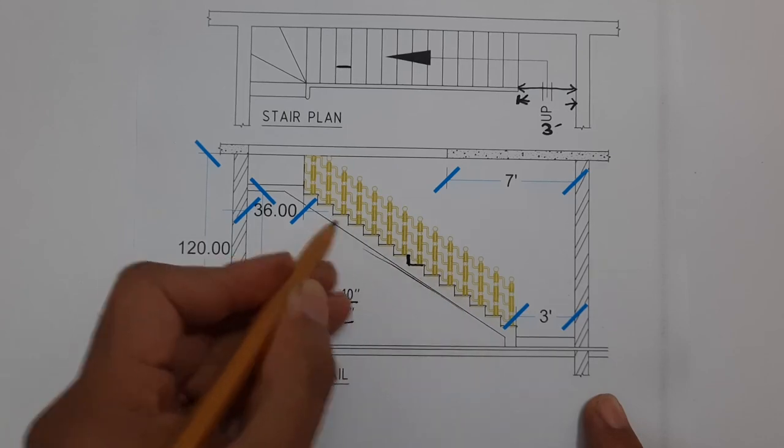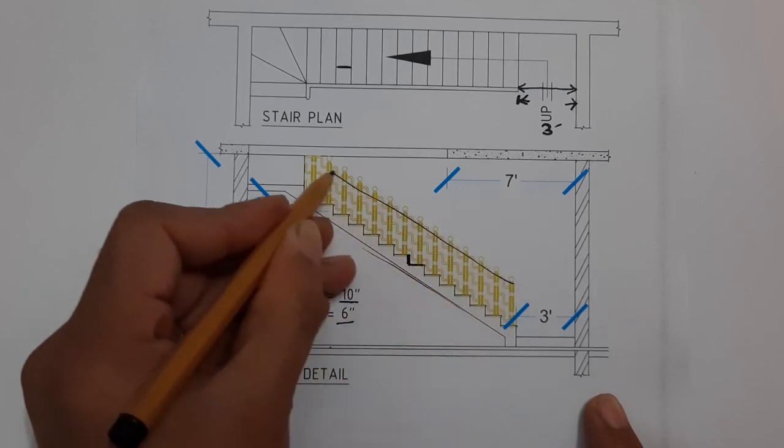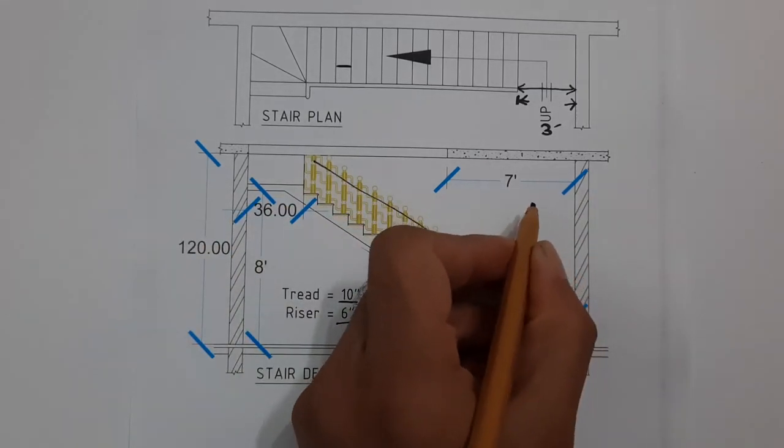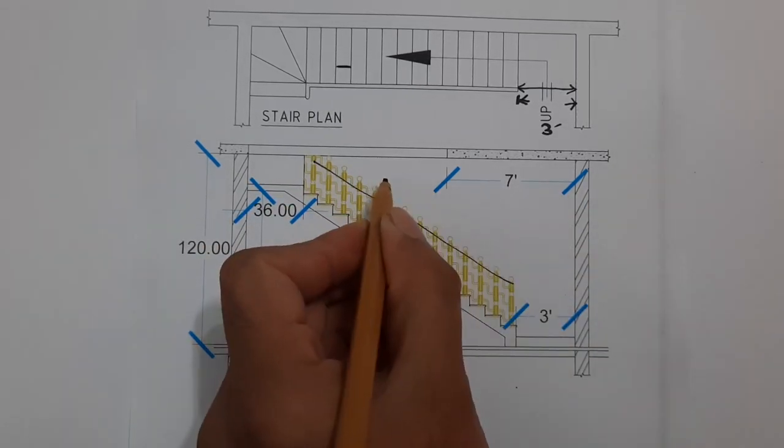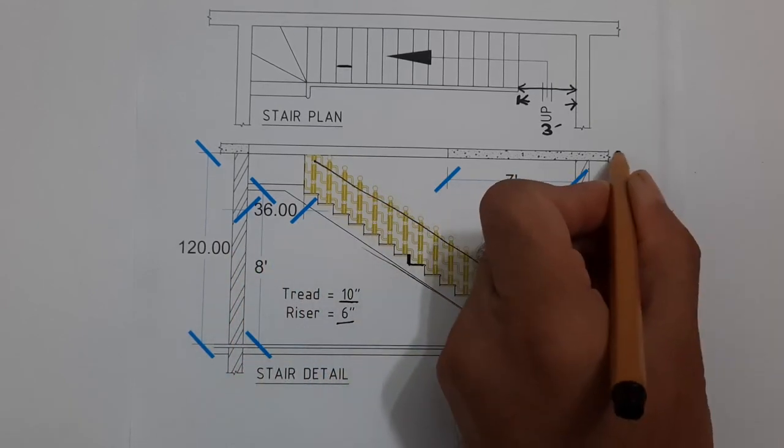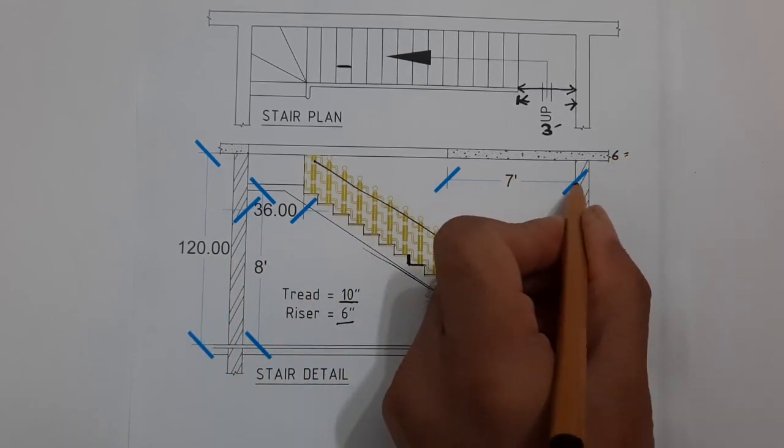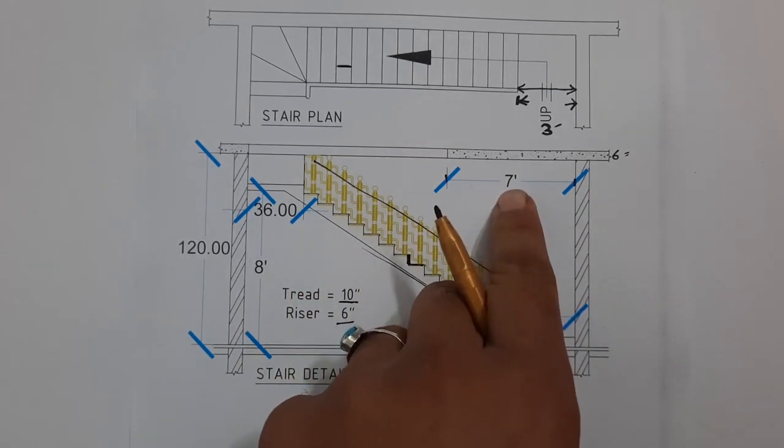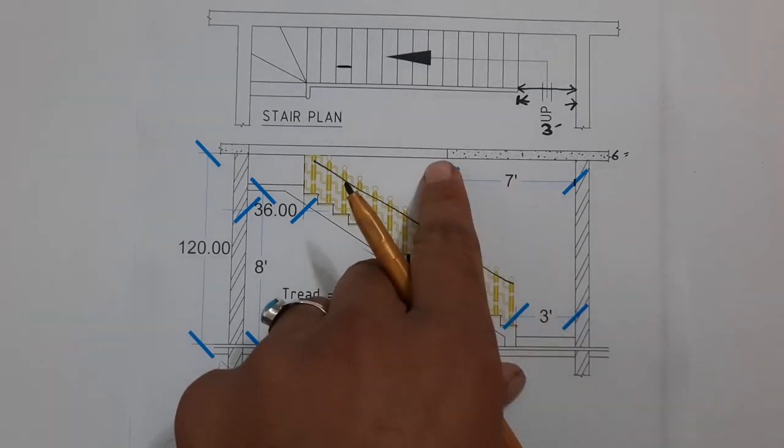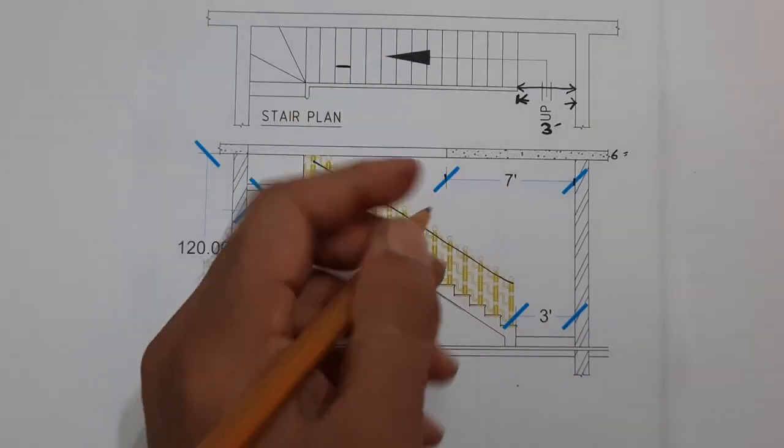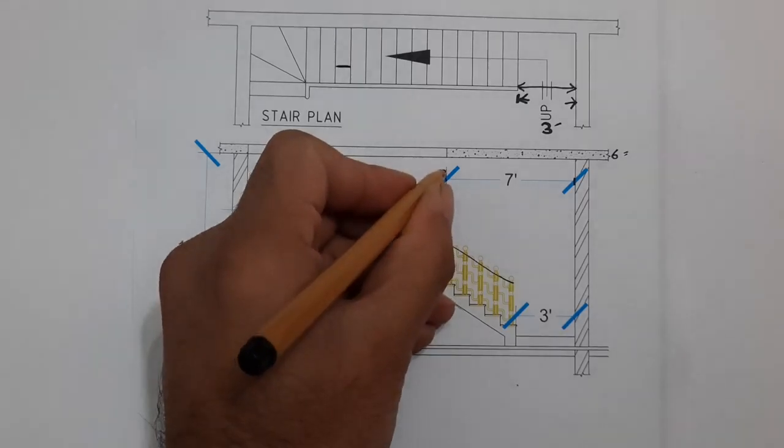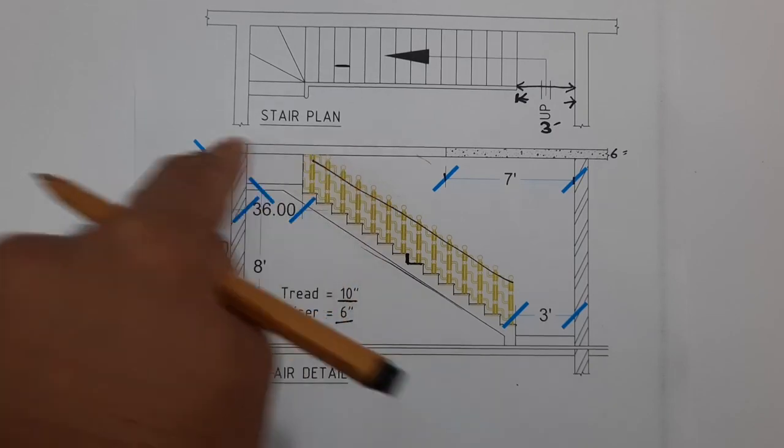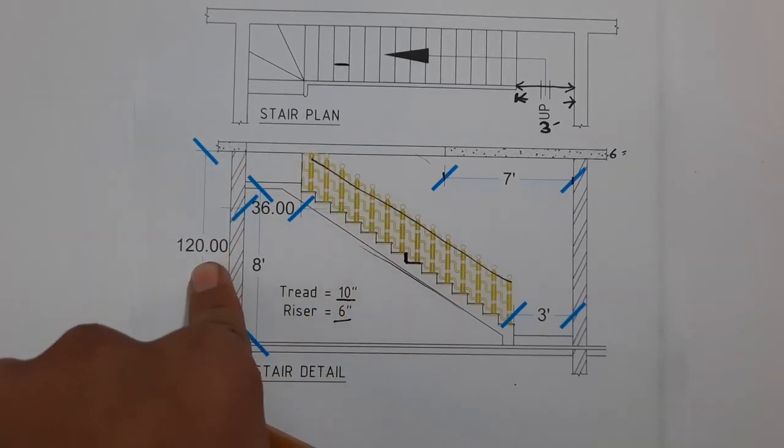And this is the handrail you can see. This is RCC slab, which thickness is about 6 inches. So you can see from here to here, this is 7 feet. So after 7 feet it should be open, that's why, because it can cut your head here if you are crossing this stair to the height of 12 feet or 120 inches.